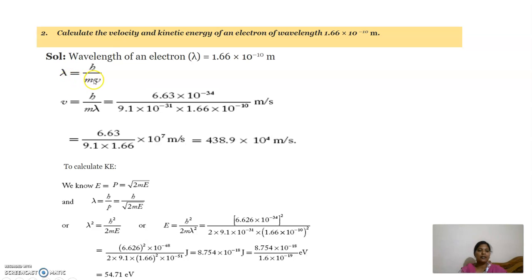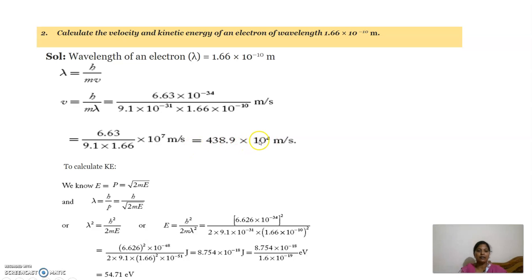Rearranging, we get v equal to h by m lambda. h is Planck's constant, m is the mass, and lambda is the given data. Substituting all the values, we get the answer as 438.9 into 10 power 4 meters per second.